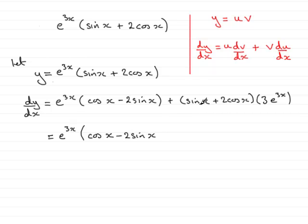And then with this term, we've got 3 times the sine x, that's plus 3 sine x. And 3 times 2 cos x, that's going to be plus 6 cos x.